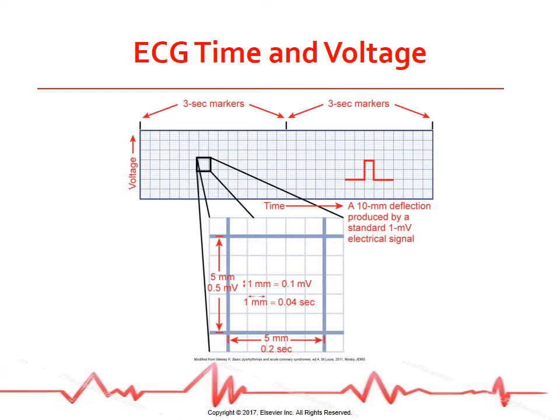To correctly interpret an ECG, measure time and voltage on the ECG paper. The ECG paper consists of large heavy lines and small light lines in squares. Each large square consists of 25 smaller squares — 5 horizontal and 5 vertical. Horizontally, each small square represents 0.04 seconds, meaning one large square equals 0.20 seconds, and 300 large squares equal 1 minute. Vertically, each small square represents 0.1 millivolts, and one large square equals 0.5 millivolts. Use these squares to calculate the heart rate and measure time intervals for the different ECG complexes.